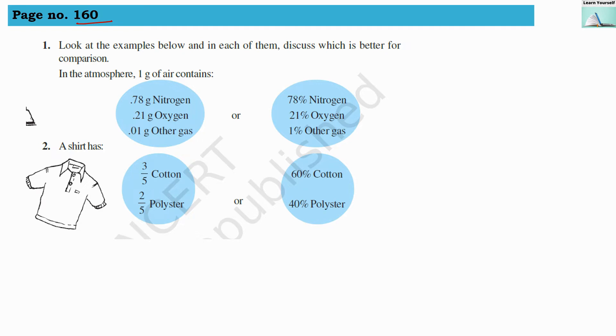In the atmosphere, 1 gram of air contains 0.78 gram nitrogen, 0.21 gram oxygen, 0.01 gram other gases. So this is one kind of comparison in which we are seeing the numbers in decimals. Other comparison in which we are seeing the numbers in percentage. So here the quantities are clear that 78% is nitrogen, 21% is oxygen and 1% other gases.